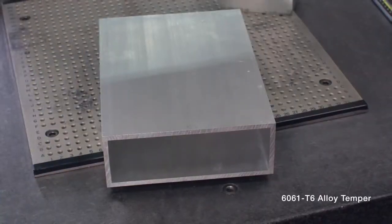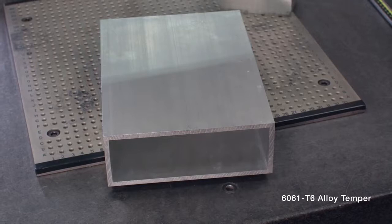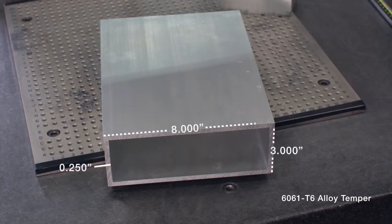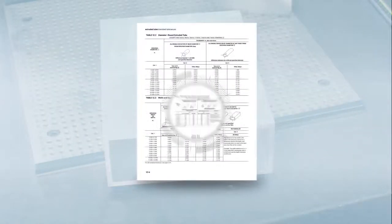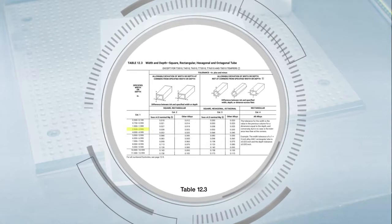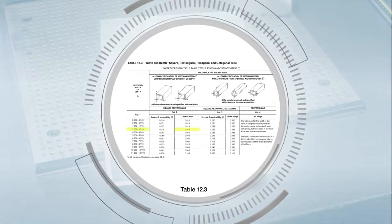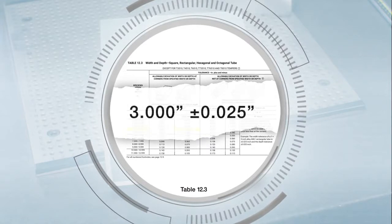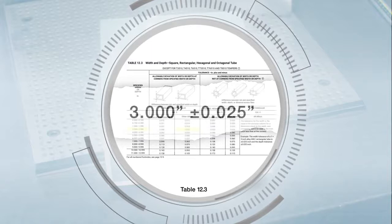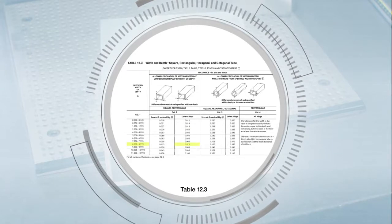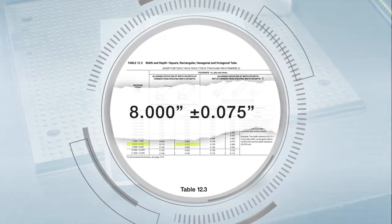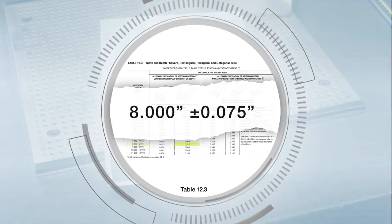Next, we'll look at a rectangular tube, which will use different tables than round tubes. We'll use table 12.3 to determine the depth and width tolerances for this 3 inch by 8 inch by 0.25 inch rectangular tube in 6061-T6 alloy temper. We will start by finding the tolerances to be used at the corners. In table 12.3, we'll use column 1 to find the correct range for the 3 inch depth and go to the right side of column 2 for other alloys, finding the tolerance to be 3.000 inches plus or minus 0.025 inches. Then we'll do the same for the 8 inch width, finding the tolerances on the right side of column 2, which is 8.000 inches plus or minus 0.075 inches.